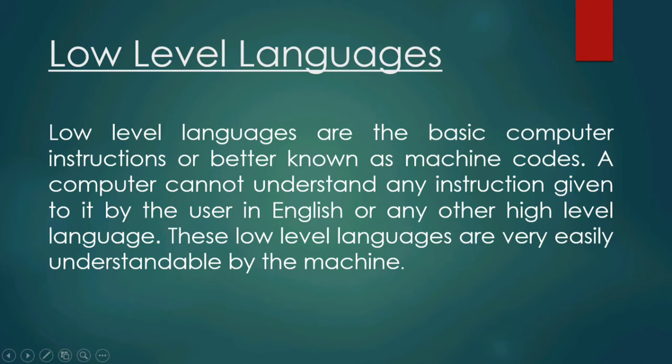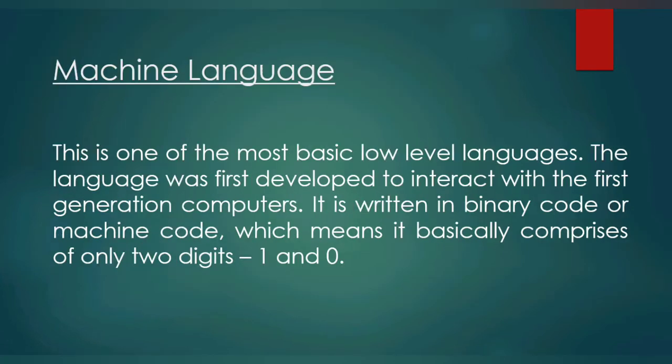Low-level language is divided into two types: machine language and assembly language. Machine language is the combination of zeros and ones, which is only understandable by the computer. It is not easily understandable by humans, and it is very difficult to write a program in machine code, which is in the form of zeros and ones.